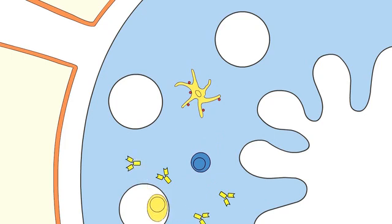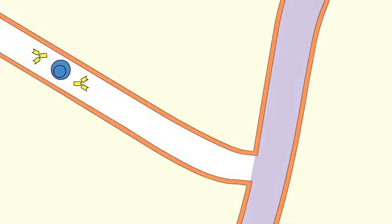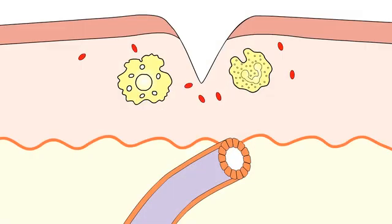Effector T cells and antibody molecules return to the circulation. They leave the circulation again at the site of infection, where inflammatory mediators have induced changes in the blood vessel endothelium.